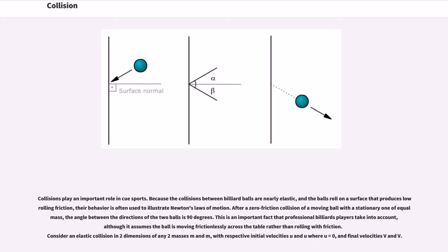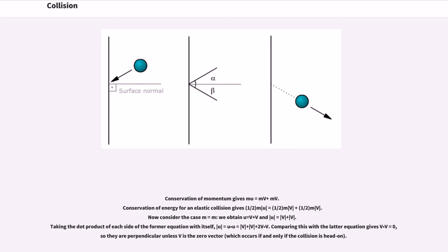Consider an elastic collision in two dimensions of any two masses m₁ and m₂, with respective initial velocities u₁ and u₂ where u₂ equals 0, and final velocities v₁ and v₂. Conservation of momentum gives m₁u₁ = m₁v₁ + m₂v₂. Conservation of energy for an elastic collision gives m₁|u₁|² = m₁|v₁|² + m₂|v₂|². Now consider the case m₁ = m₂, we obtain u₁ = v₁ + v₂ and |u₁|² = |v₁|² + |v₂|².